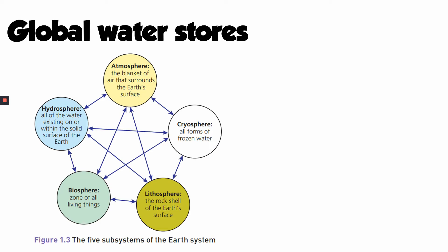We're going to be looking at the main stores of water and also considering how water is moved between those stores. Looking at this diagram, we can see that water is stored within lots of different subsystems of the Earth, lots of different spheres. The word 'hydrosphere' is the term we use for all of the water on planet Earth in any of its forms — liquid, gas or ice. It's important that we understand the relative size of those stores and how the water is transferred between them.